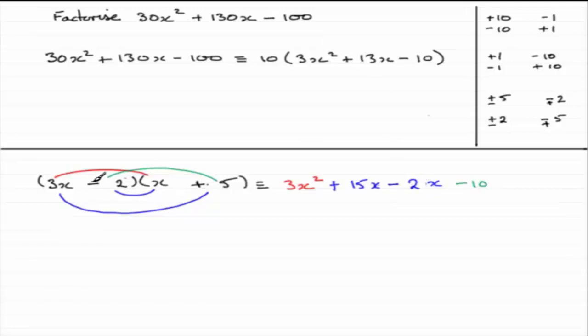If we'd had the wrong signs here, plus here and a minus here, all we'd have got would have been minus 13x. And we would have known that we've got to switch the signs only.